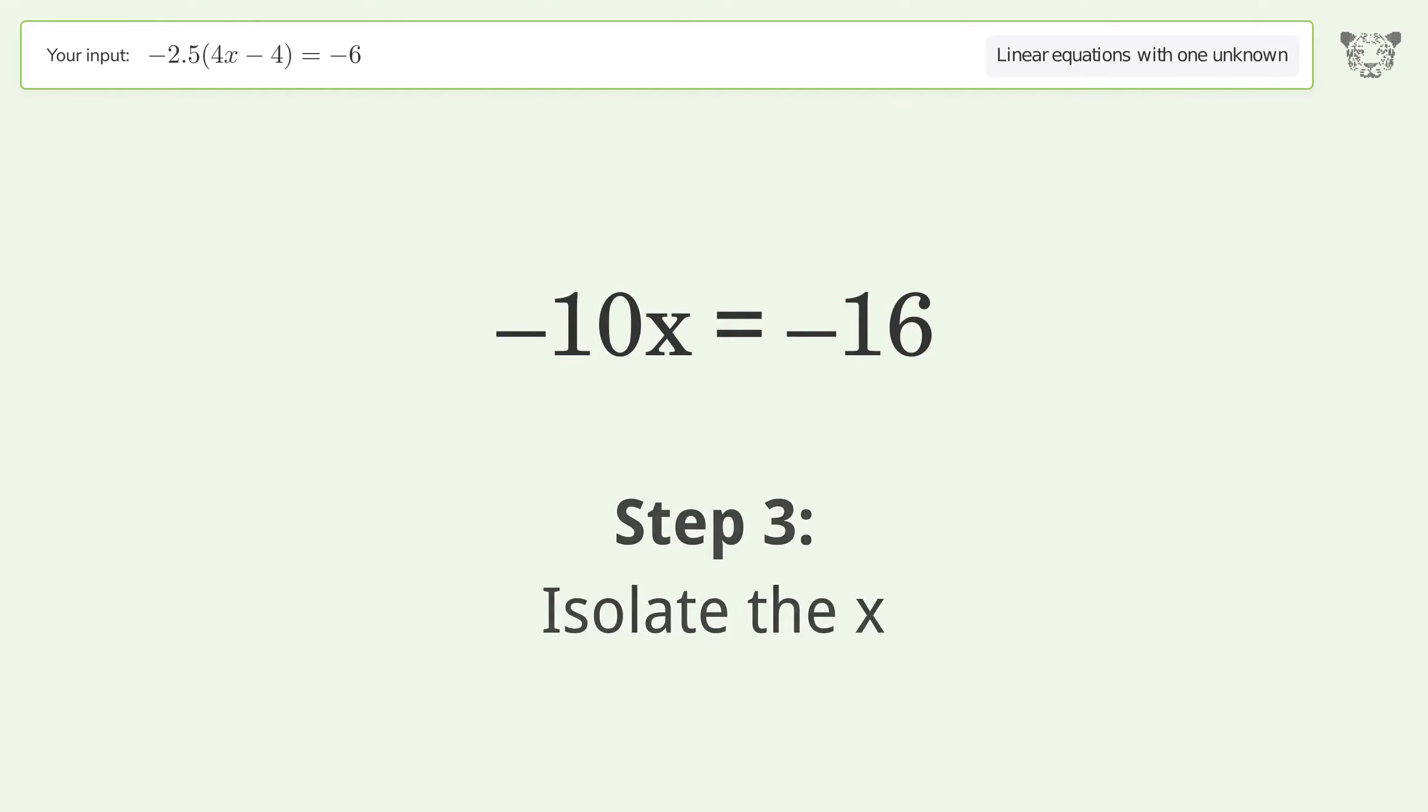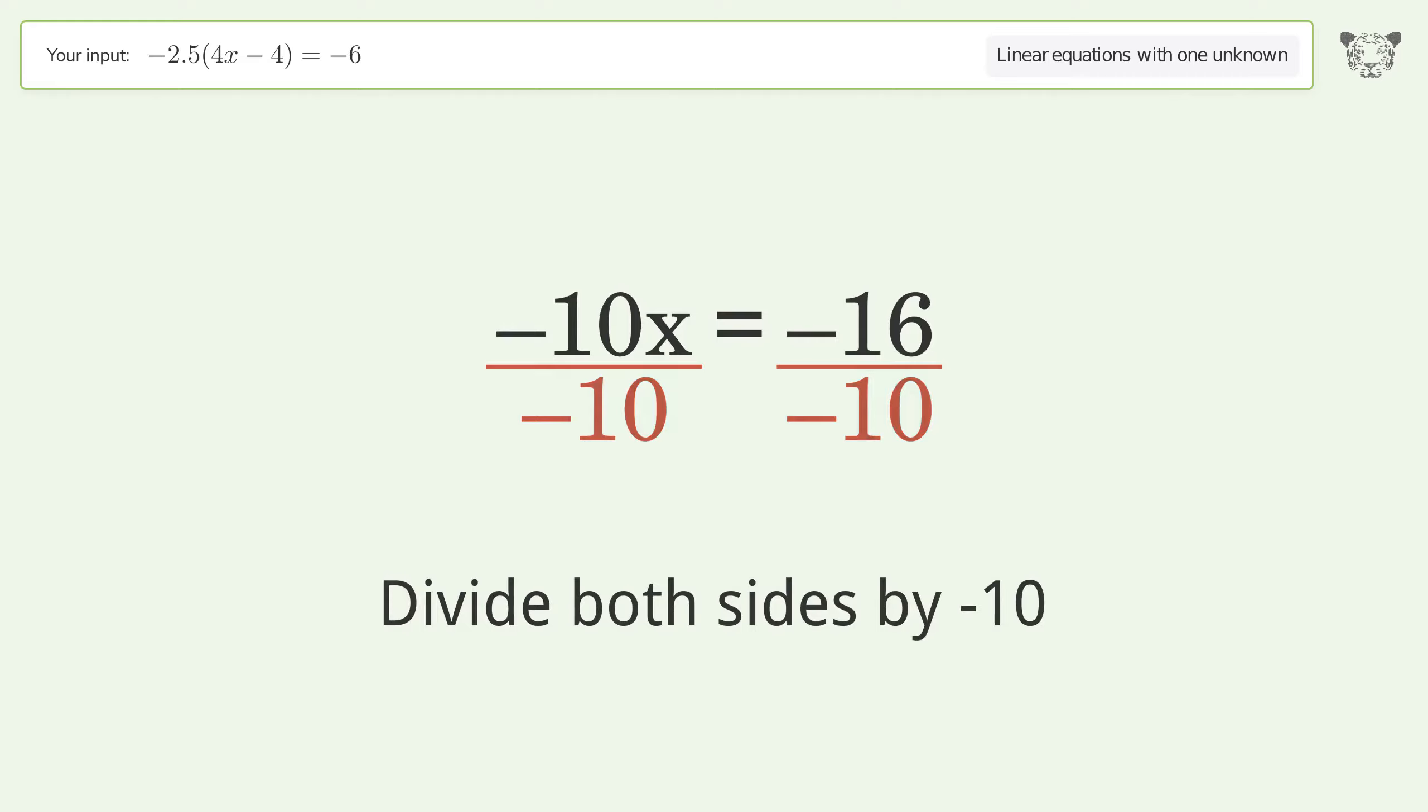Isolate the x. Divide both sides by negative 10. Cancel out the negatives.